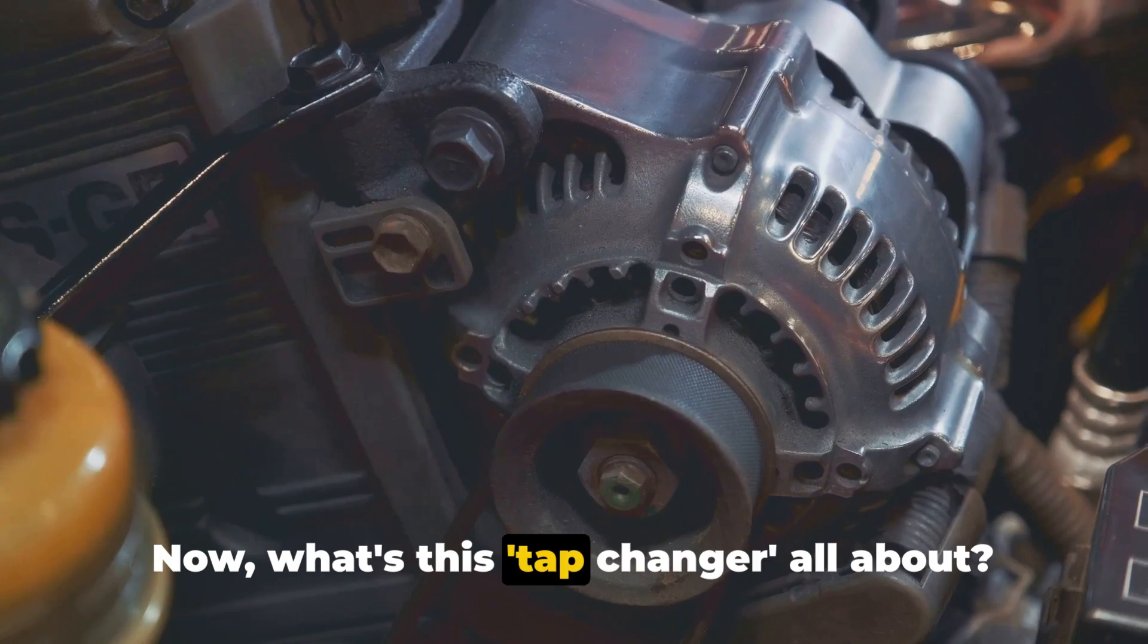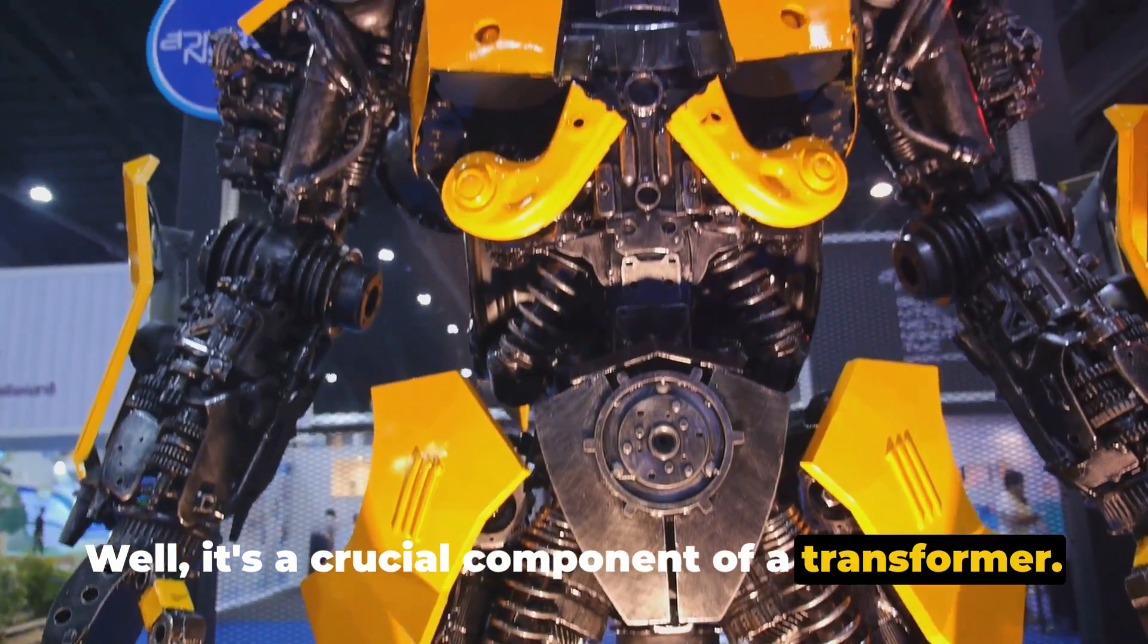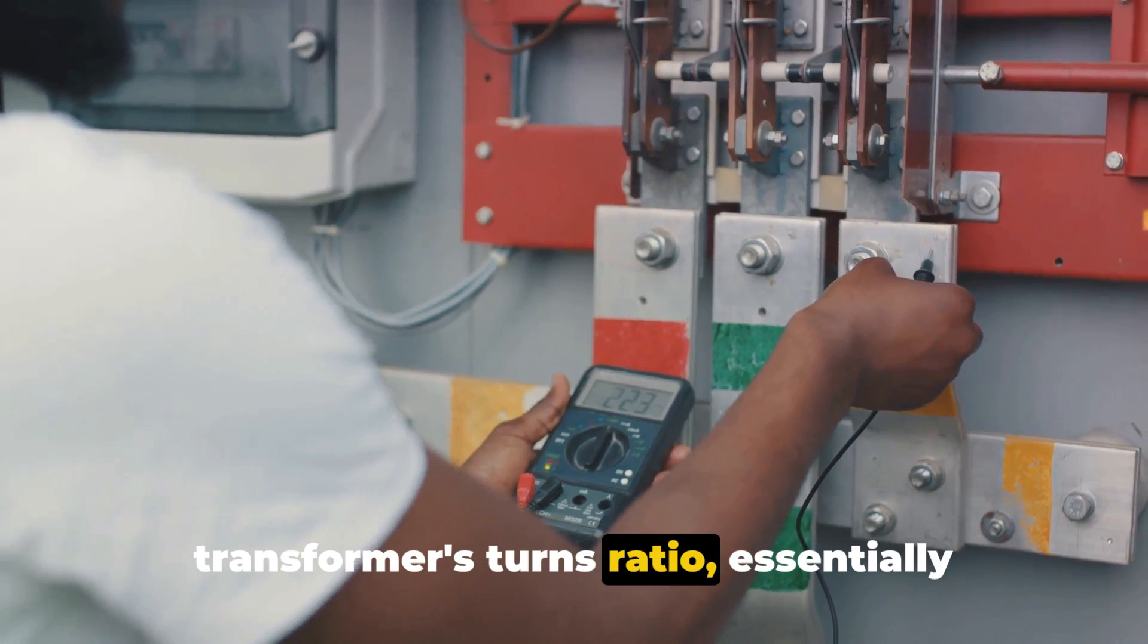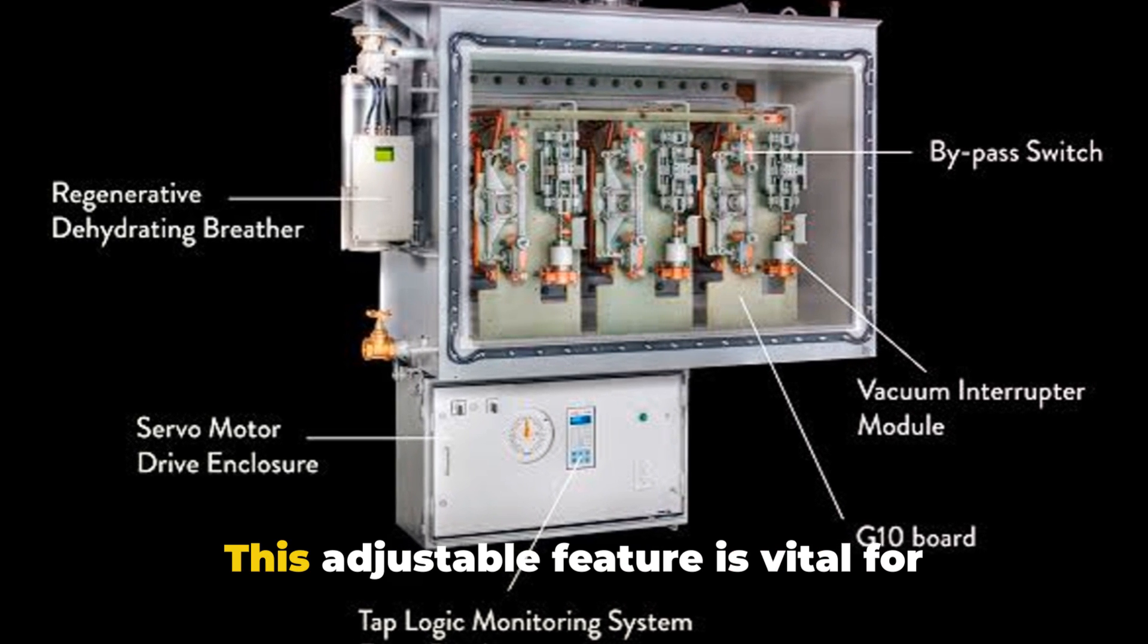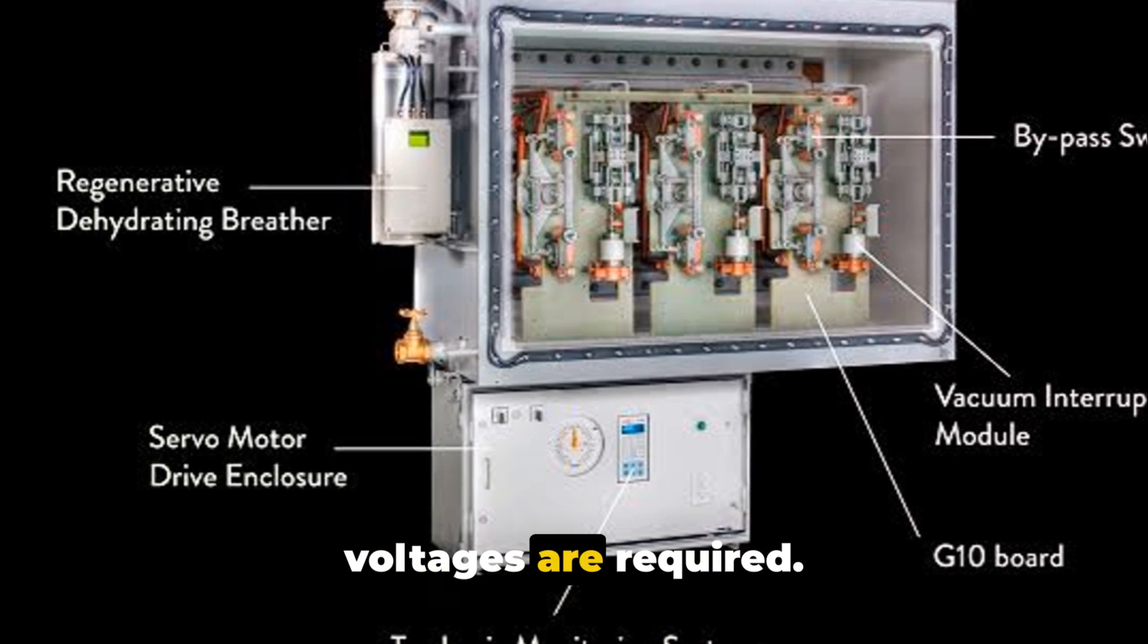Now, what's this tap changer all about? Well, it's a crucial component of a transformer. It allows for the adjustment of the transformer's turns ratio, essentially regulating the output voltage. This adjustable feature is vital for different applications, where varying voltages are required.